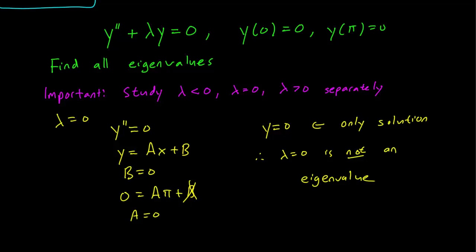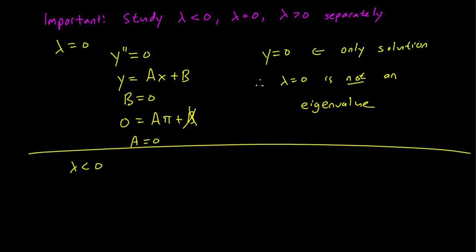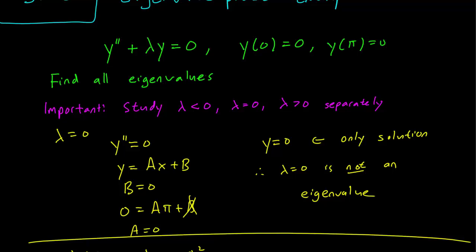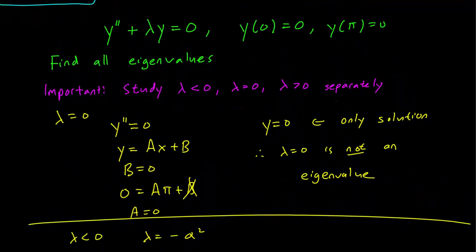Next, let's handle the case where lambda is negative. So let's write lambda equals minus alpha squared for some alpha. I'm going to handle this problem a little differently than the way the book does it, because I don't really want to deal with hyperbolic sines and hyperbolic cosines. But if you're familiar with that, that way is a little bit faster. You can look at the book if you want to see a slightly different way to solve this section of the problem.